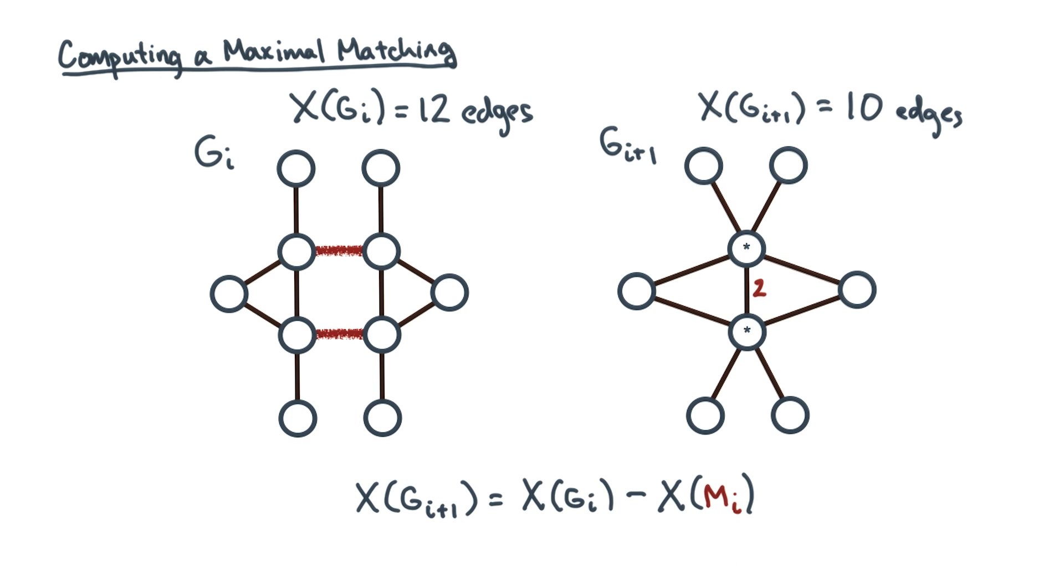Now, the strategy of selecting heavy edges will tend to try to increase this factor. And if this factor is bigger, then this factor will be smaller. In other words, the heavy edge heuristic is really about increasing this term in order to decrease the overall edge weight in the next graph.